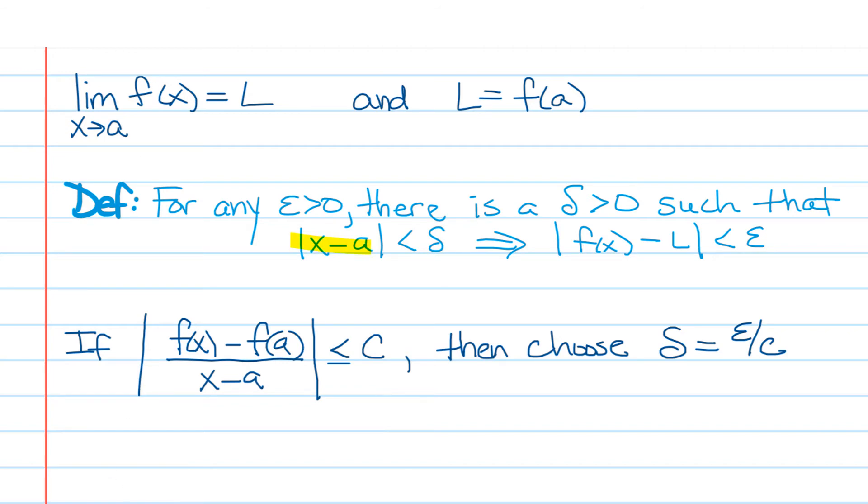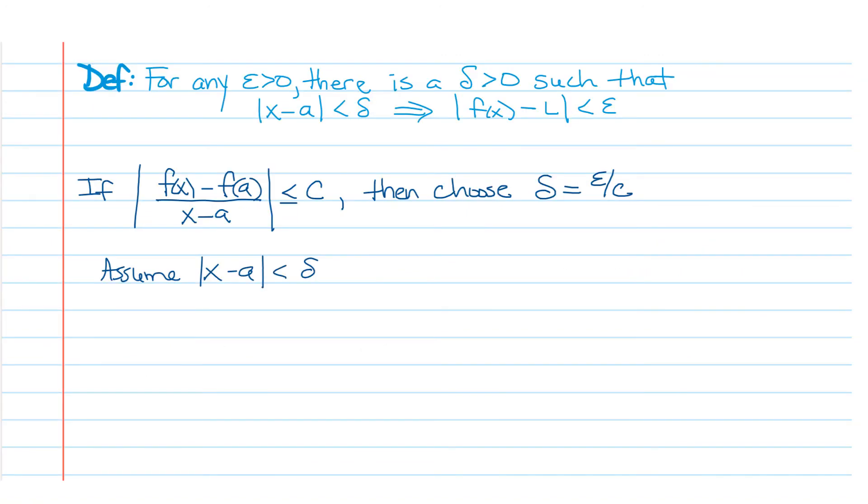So first of all, the left side of this implication is going to be assumed. If that happens, then the other part has to happen. So we're assuming that the absolute value of X minus a is going to be less than delta. Okay, so what does that tell us? We want to work our way over to the right side now, so we want to establish that the absolute value of f of X minus L is less than epsilon.